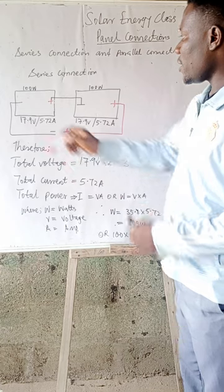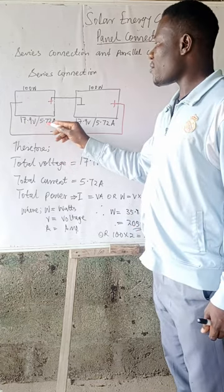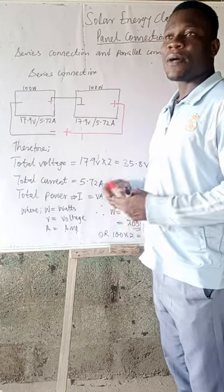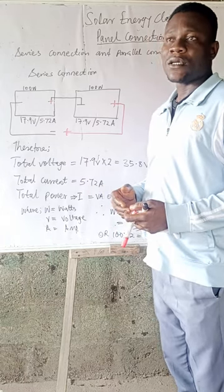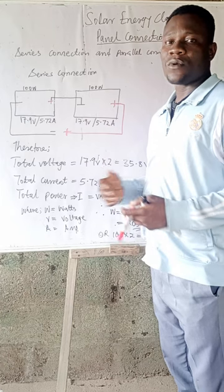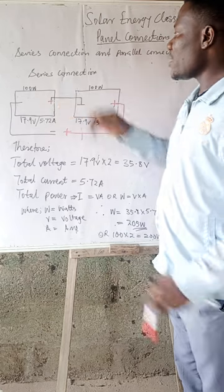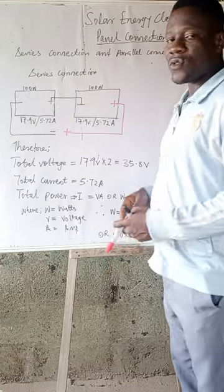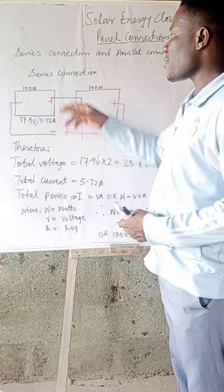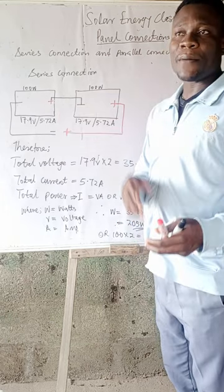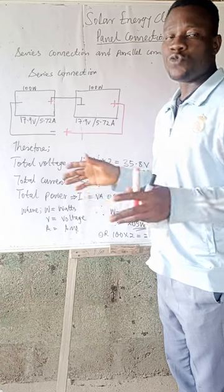The panel here has 17.9 volts and 5.72 amps. So on your panel, what you consider is the voltage and the ampere. That's the open circuit voltage — that's what it gives you when you run every connection. When you connect in series, what I mean by connecting in series is linking the positive terminal of one panel to the negative terminal of a different panel.